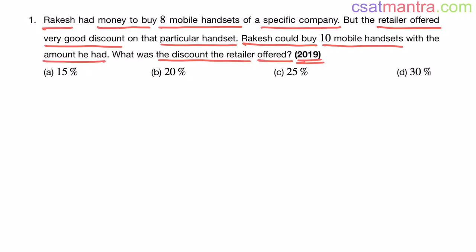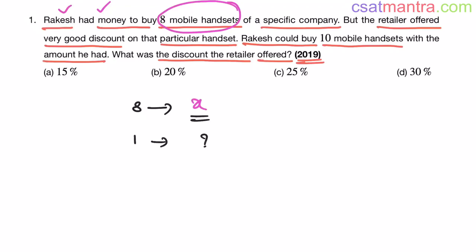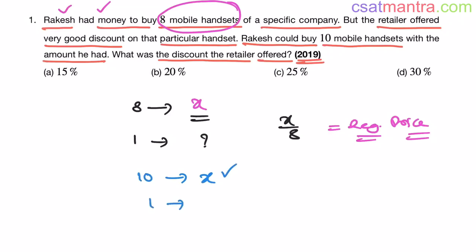Some people have difficulty assuming the cost. We assumed the amount Rakesh had as 800 rupees. If you're unsure which value to assume, just let the total amount Rakesh had equal X. So Rakesh had X rupees to buy 8 mobile handsets. The cost of each handset is X divided by 8 — this is the regular price. The shop owner gives a discount, and now Rakesh can buy 10 mobiles. So the selling price per handset is X divided by 10.